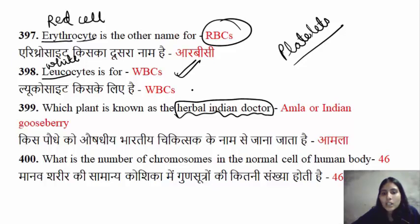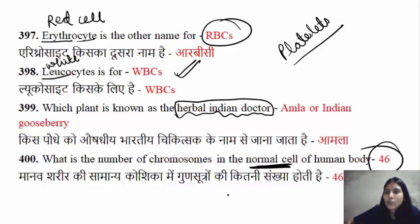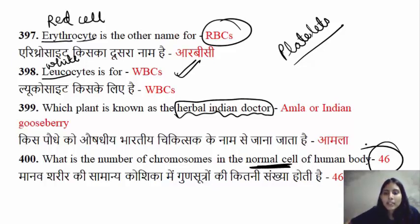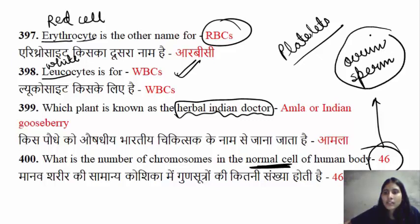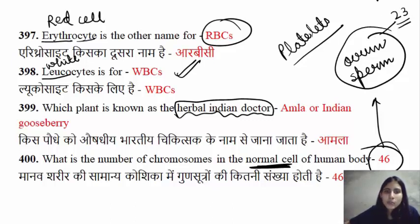The total number of chromosomes in normal human body cells is 46. These 46 chromosomes are present in every cell of your body — hair cells, blood cells, all cells. However, sperm and ovum do not have 46 chromosomes — they only have 23 chromosomes.